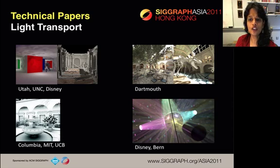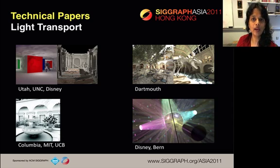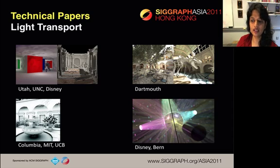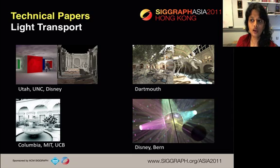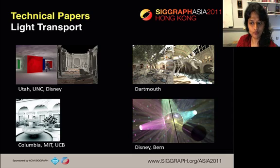In the Light Transport session, we have a paper that computes coarse-scale distant indirect lighting effects in scenes by combining compact transport on simple shapes. A paper that efficiently renders many-light scenes using the global and local structure of the light transport matrix. A new frequency analysis of shadow light fields for distant illumination. And a paper that introduces progressive photon beams for simulating both heterogeneous and homogeneous volumetric media.